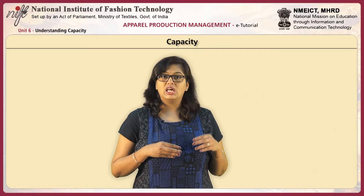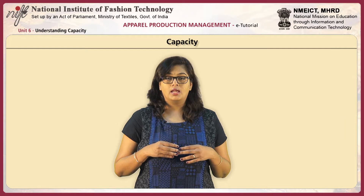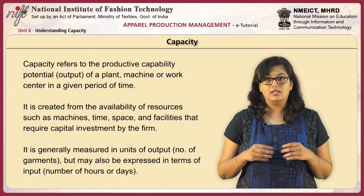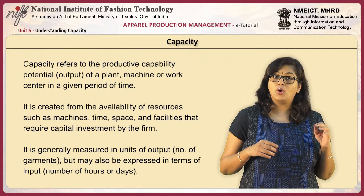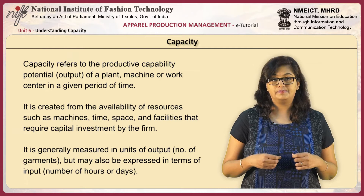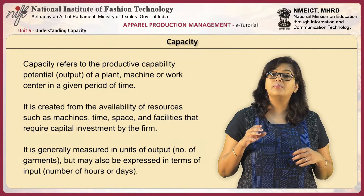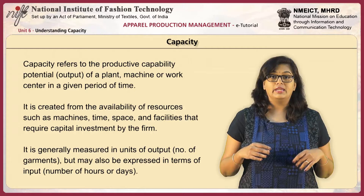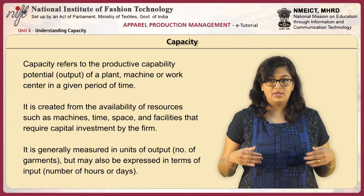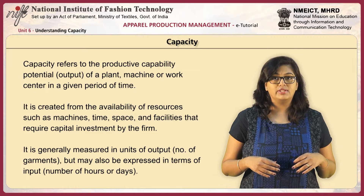Let us try to understand what capacity is. Capacity refers to the productive capable potential — in other words, the output of a plant, a machine, or a work center in a given period of time. Capacity is created from the availability of resources. The resources could vary between machine, time, space availability, and facilities that require capital investment by the firm or the company.